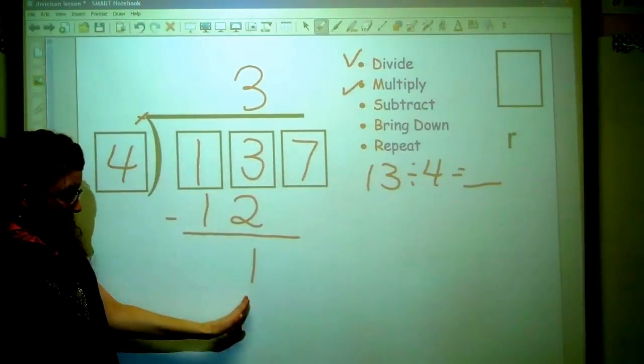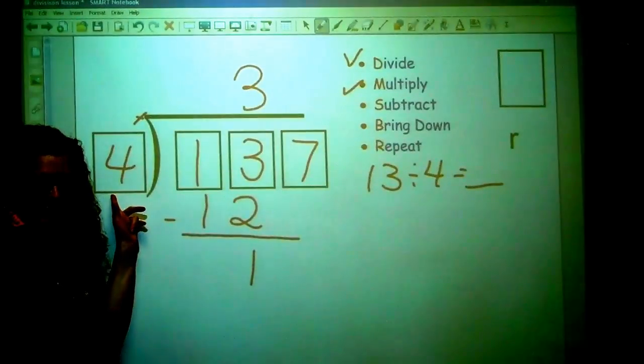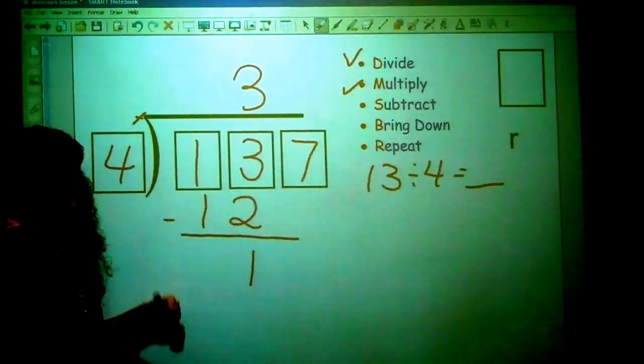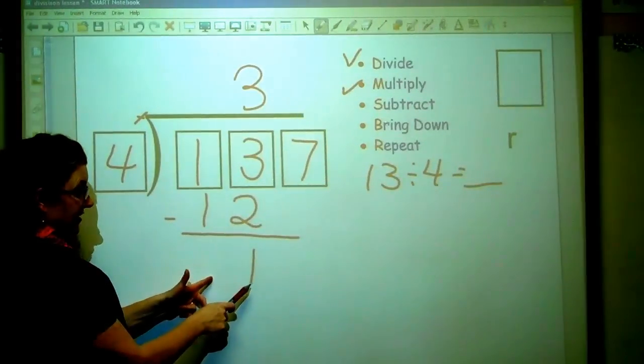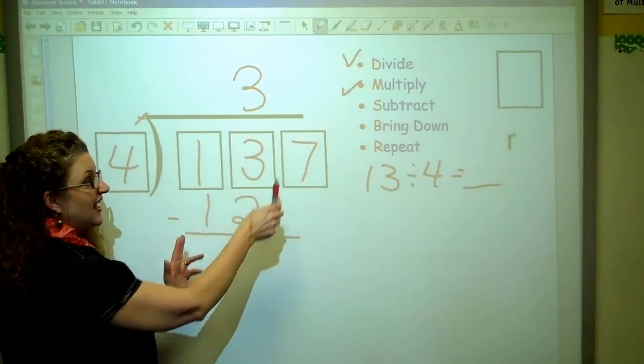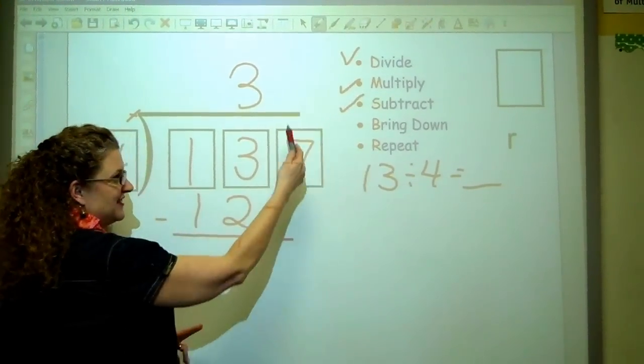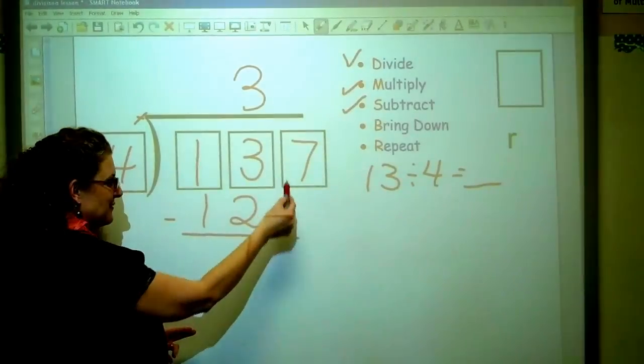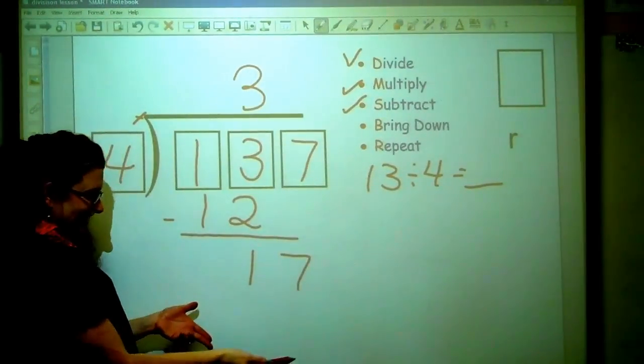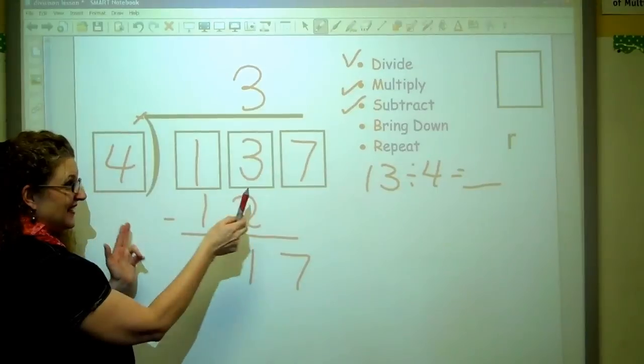So, but this number is smaller. It's less than the 4. So I'm good to go. Okay. So I know I've got a 1. And I still have, I've subtracted, I have a number to bring down. So I bring down my 7 at this time.